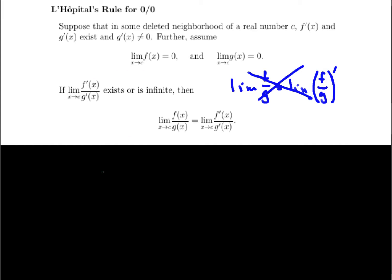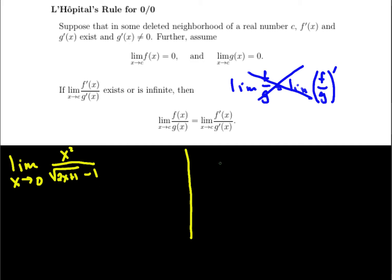So employing L'Hôpital's rule to do some more examples. Let's look at the limit as x approaches zero of x squared divided by the square root of 2x plus 1 minus 1. We've got to first investigate the limit at the top and the limit at the bottom to make sure we can use L'Hôpital's rule. The limit as x approaches zero of x squared is a nice continuous function, so we just plug it in: zero squared, which is zero.